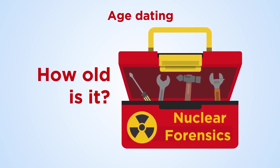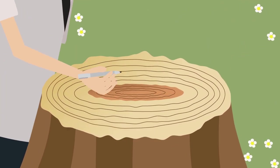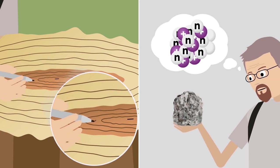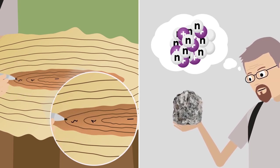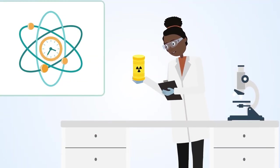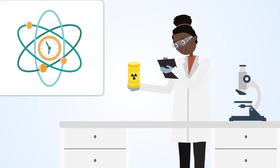There are many variations of age-dating in science. Biologists age-date trees from counting their rings. Geologists age-date rocks by counting atoms produced by radioactive decay over long timescales. And nuclear forensics experts age-date nuclear materials by counting atoms from radioactive decay over the last century.